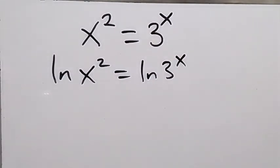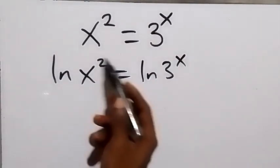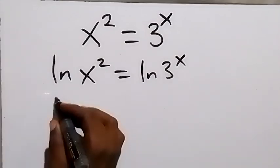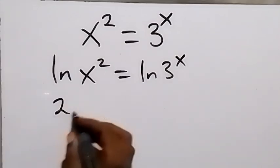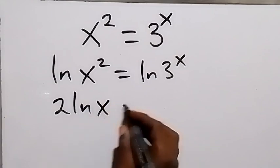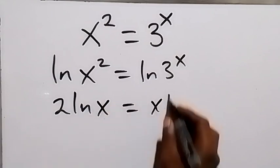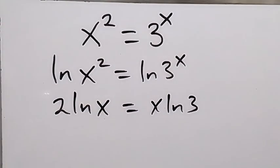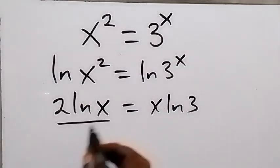By the law of logarithms, we can bring the power to the front. This becomes 2·ln(x) equals x·ln(3). From here, let's divide both sides by 2x.